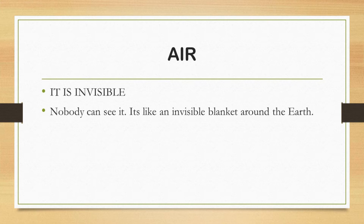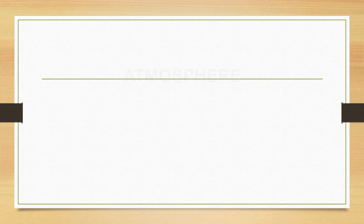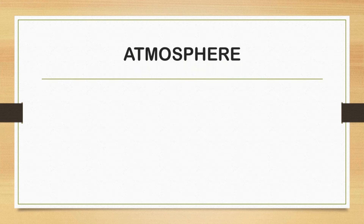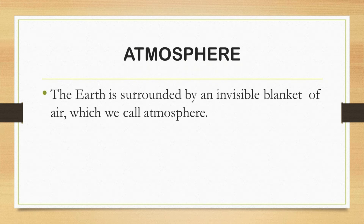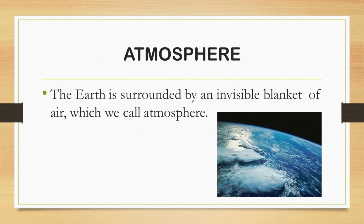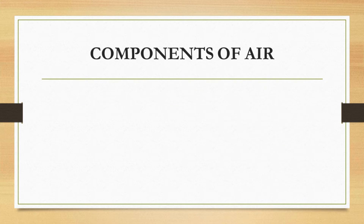This invisible blanket around the earth is called atmosphere. So, what is atmosphere? The earth is surrounded by an invisible blanket of air, which we call atmosphere. Next, we are going to learn about components of air.